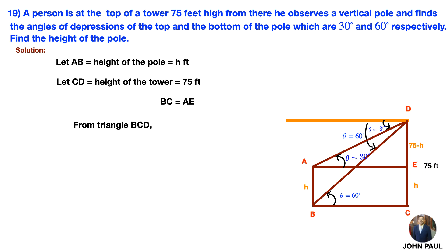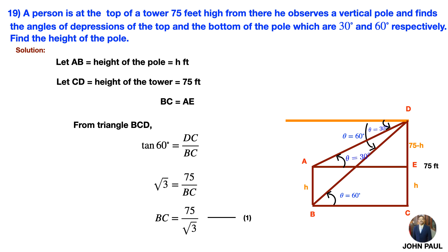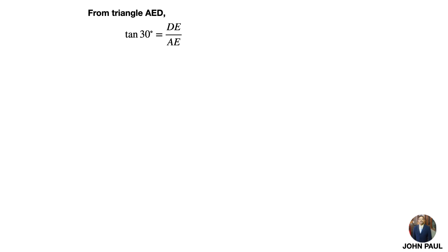From triangle BCD: tan 60° equals DC by BC, so root 3 equals 75 by BC, giving BC equals 75 by root 3. Consider this as equation 1. From triangle AED: tan 30° equals DE by AE, so 1 by root 3 equals (75 minus H) by BC. Since AE equals BC, cross multiplying gives BC equals root 3 into (75 minus H). Consider this as equation 2.